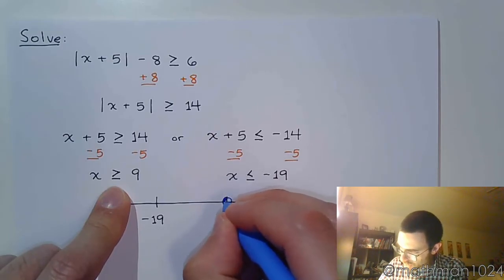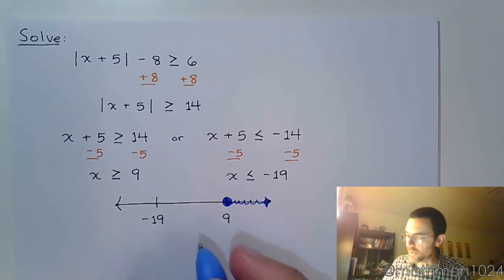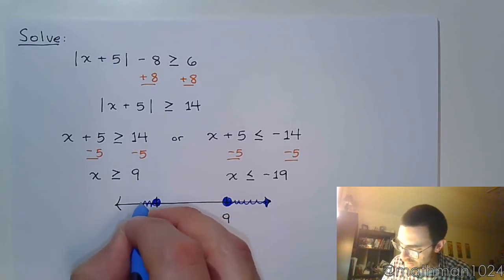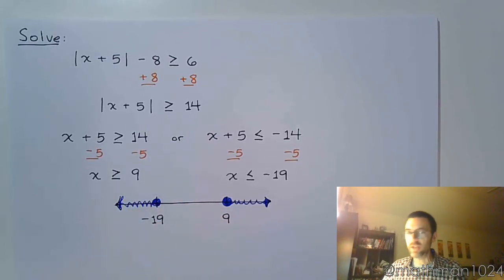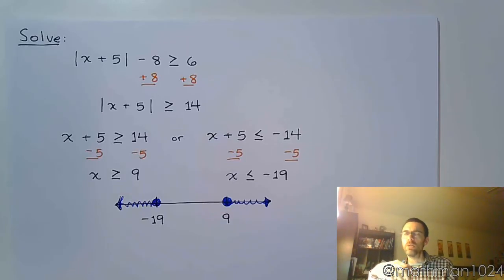Greater than or equal to 9 is a closed circle on 9 going to the right, and then less than or equal to negative 19 is a closed circle on negative 19 going to the left. These guys are going in opposite directions because I want your distance to be more than.